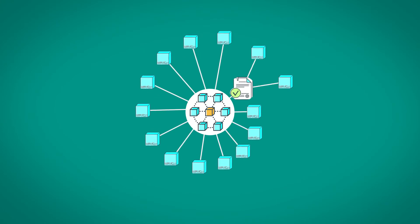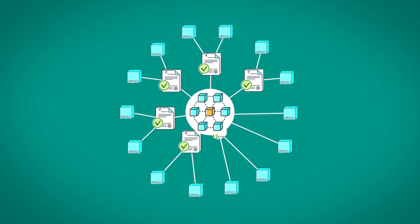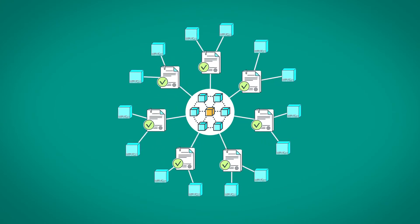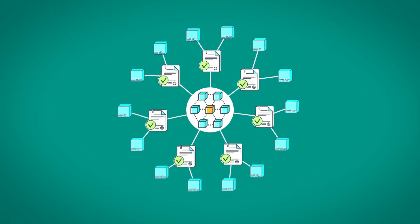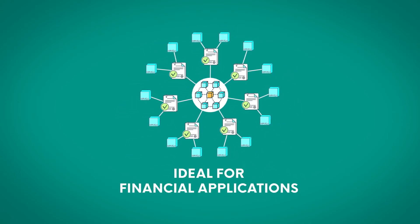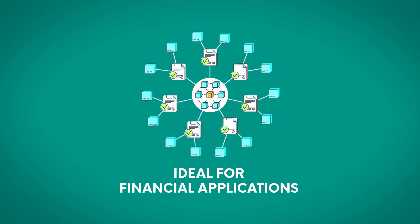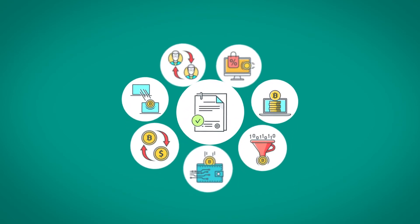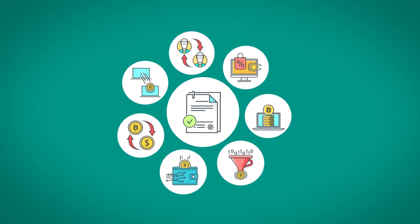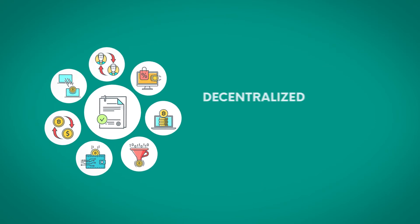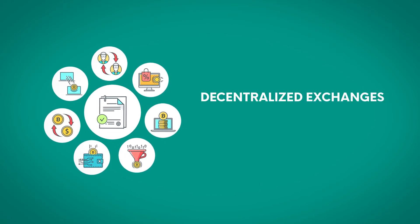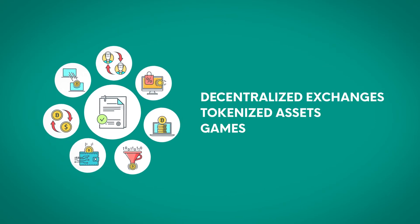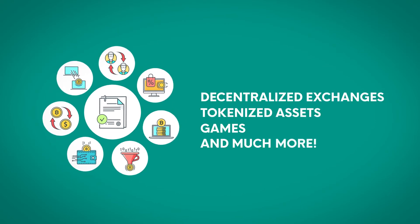Since smart contracts run on the blockchain, they are unstoppable with an auditable history, making them ideal for financial applications. Smart contracts are also flexible and can be used to build things like decentralized exchanges, tokenized assets, games, and much more.